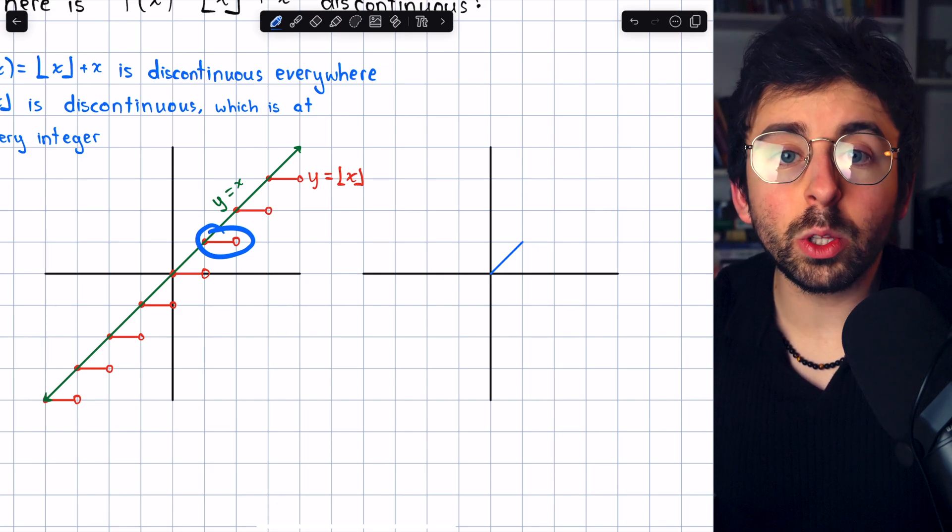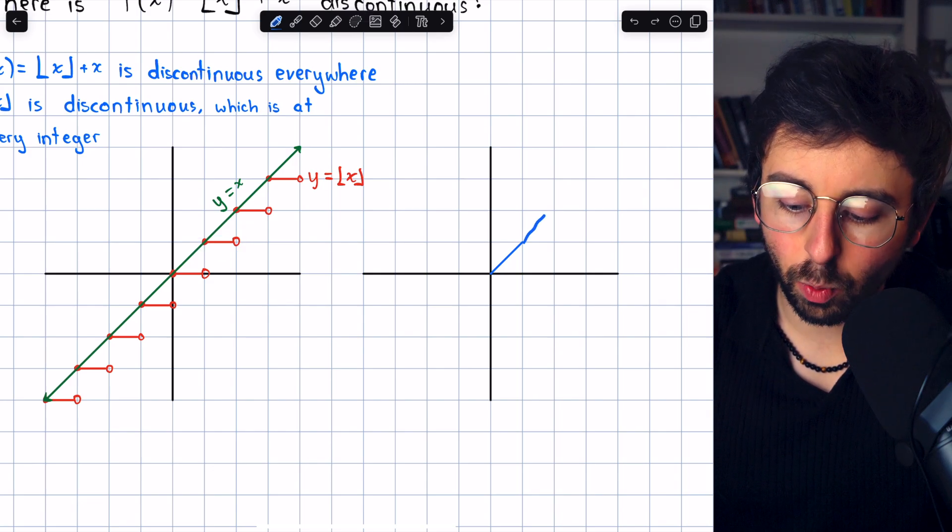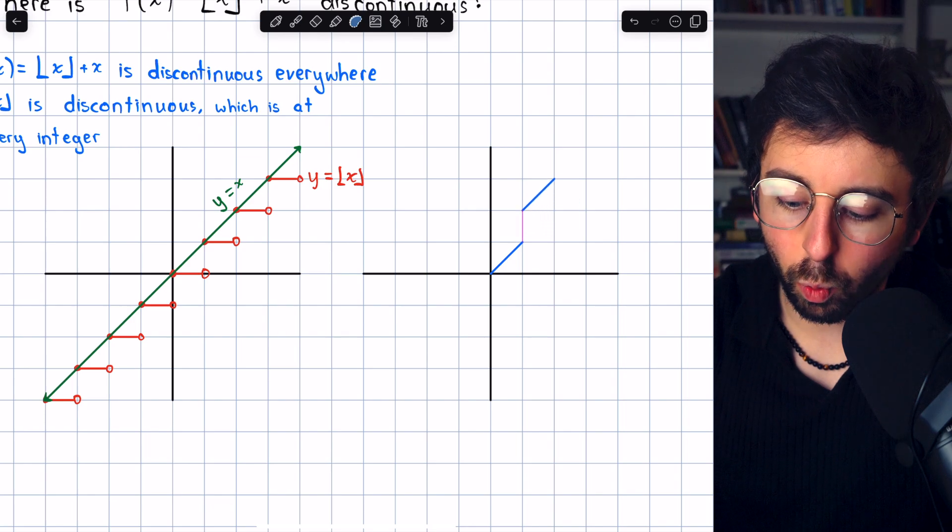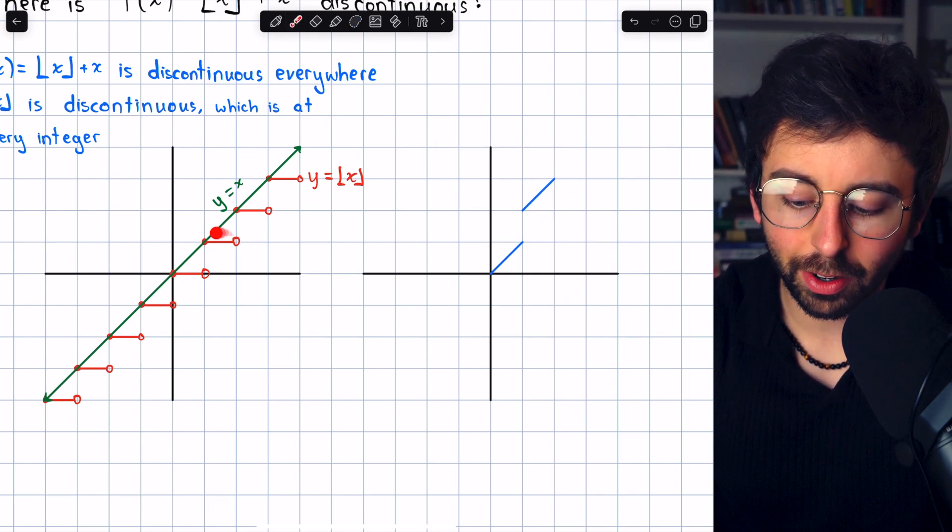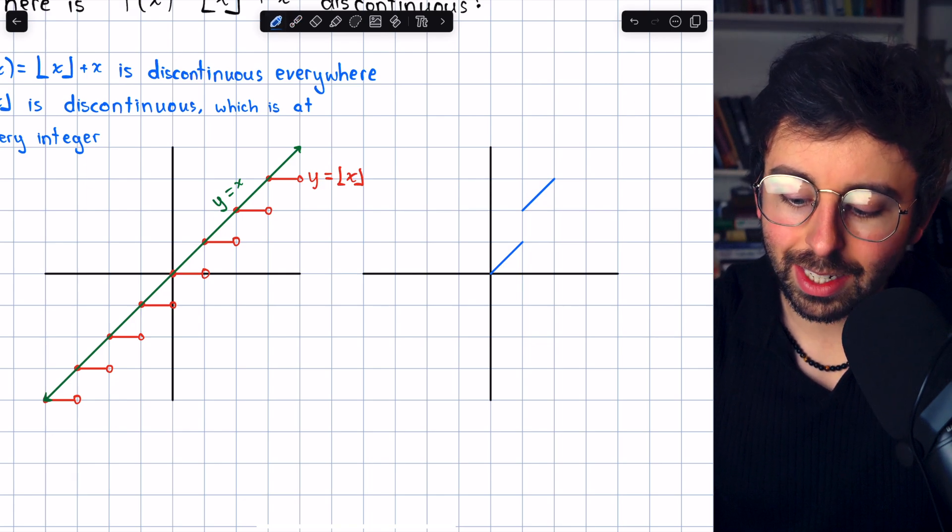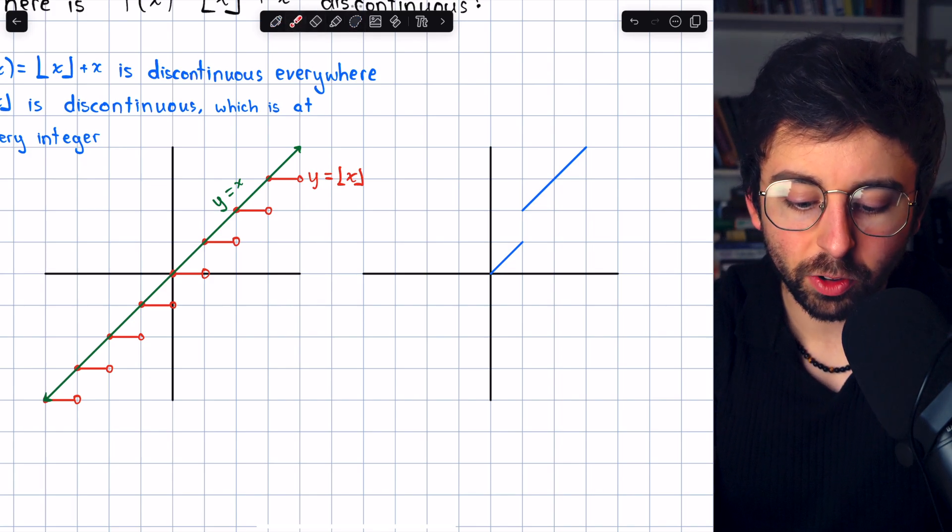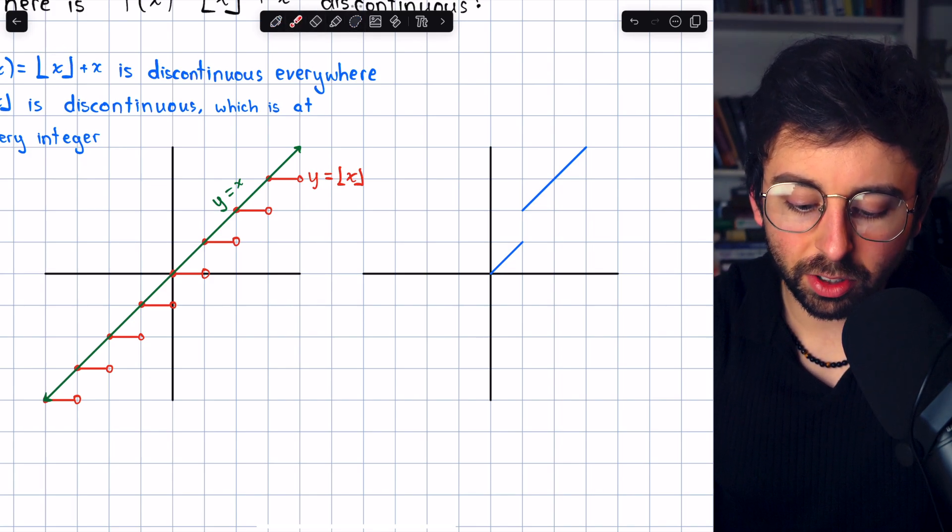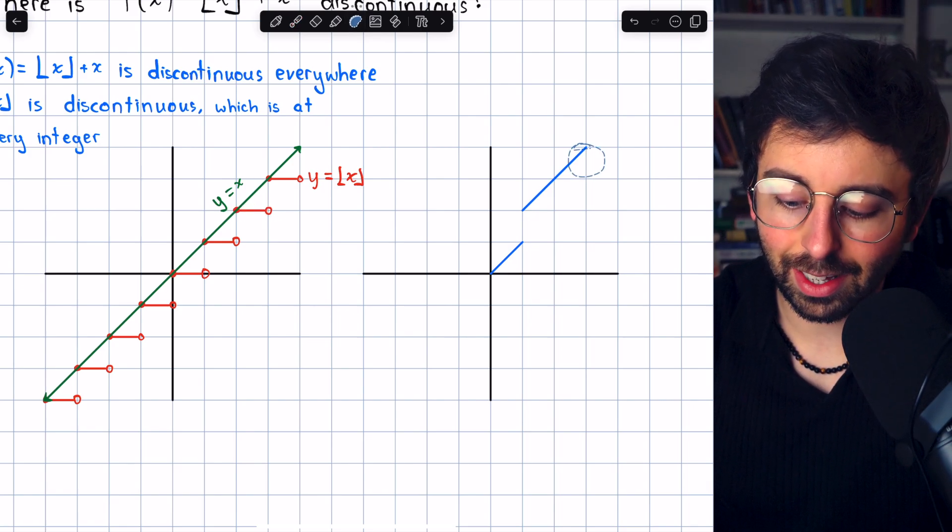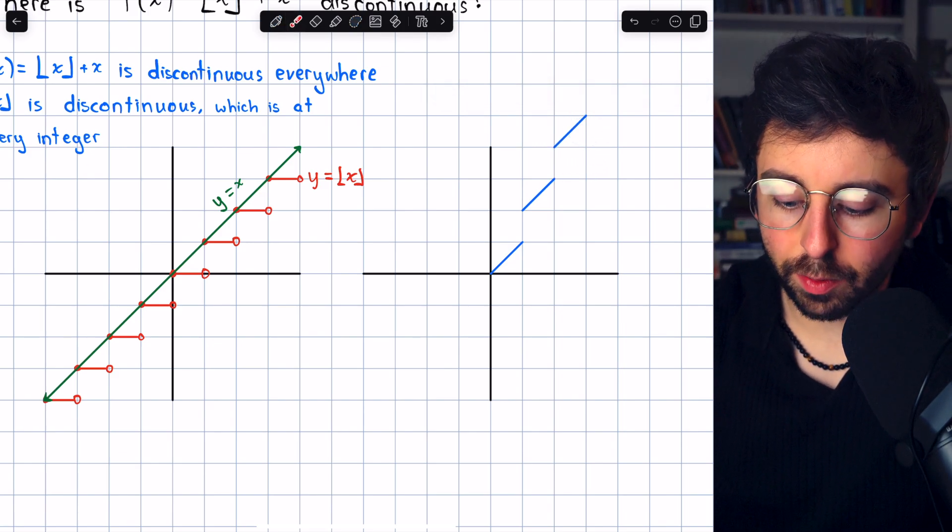When we get to x equals 1, the value of the floor function is 1. So we're still going to have the line y equals x, but it's actually going to be bumped up 1 because of this value of the floor function. Once we get to 2, a similar thing will happen. We'll continue to have y equals x, but because we're adding the floor function to it, at x equals 2, the floor function jumps up to 2. And so again, this line is going to be moved up 1.